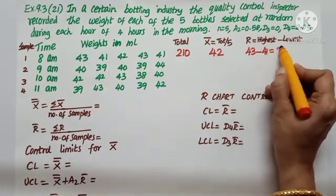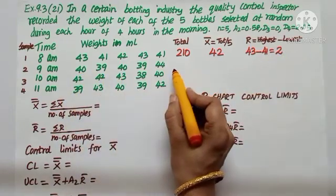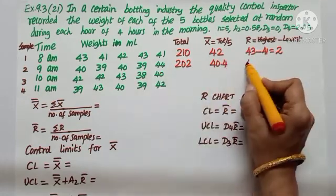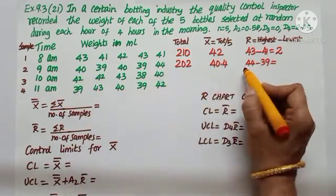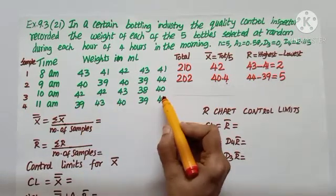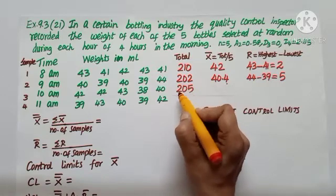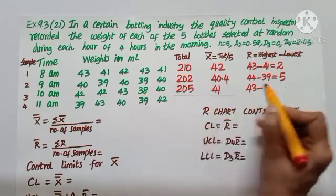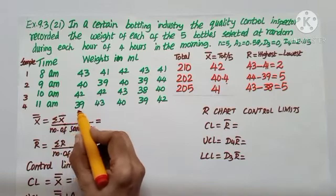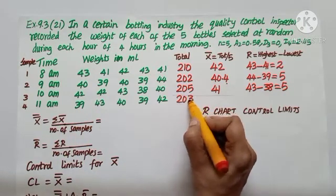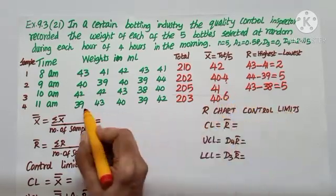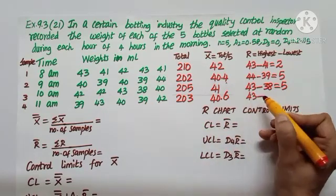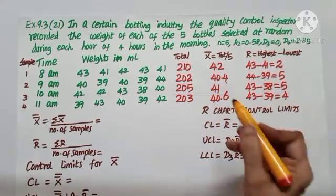Second row: total is 202, divided by 5 gives x-bar equals 40.4. Highest is 44, lowest is 39, so range is 5. Third row: total is 205, divided by 5 gives x-bar equals 41. Highest is 43, lowest is 38, so range is 5. Last row: total is 203, divided by 5 gives x-bar equals 40.6. Highest is 43, lowest is 39, so range is 4.